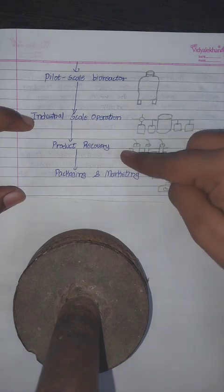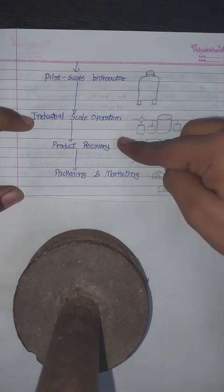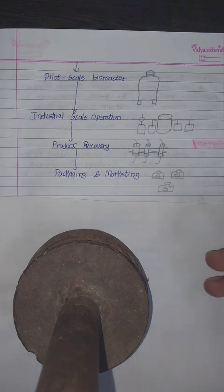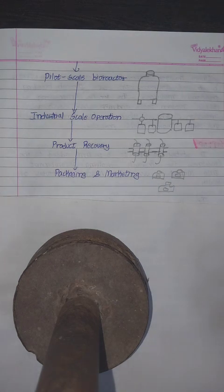Then product recovery occurs in the second last step, and at the last step we have the packaging and the marketing of the product which we have produced from the recombinant processes.